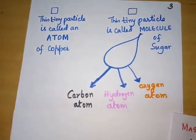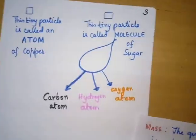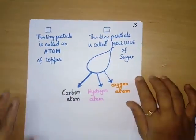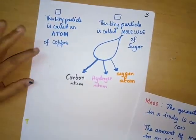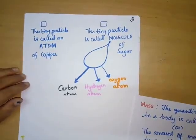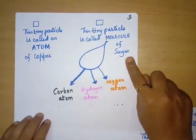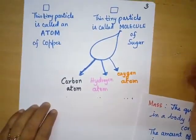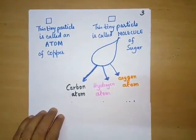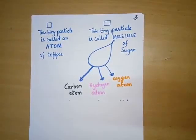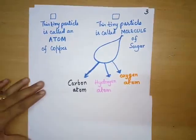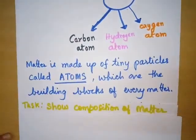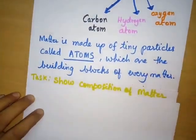Now let us compare these tiniest parts. What we got from copper was an atom, and from sugar crystal we got a molecule. This atom, if further broken, cannot be simplified into simpler forms. But the molecule of sugar — any molecule of matter — can be further broken down into its respective atoms. That's why we say atoms combine to form molecules. On breaking down the molecule of sugar further, we get an atom of carbon, atom of hydrogen, and atom of oxygen. Thus, matter is made up of tiny particles called atoms, which are the building blocks of matter.